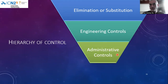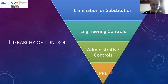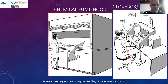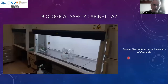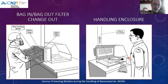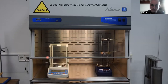Regarding engineering and administrative controls: it is not acceptable for anyone to use nanomaterials without knowing the details—without information and without training. Available engineering controls include fume hoods, biological safety cabinets, and nano chambers, which are a version of fume hood with low air speed that gives extra safety. When working with small amounts, handling enclosures can be used, with safe filter-changing procedures.